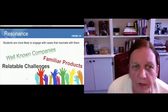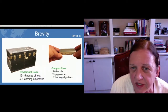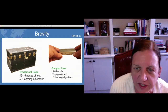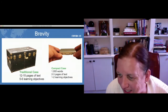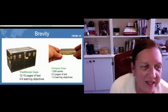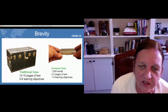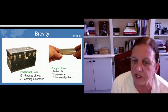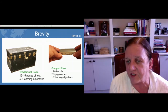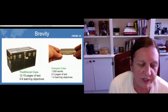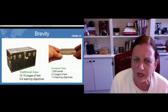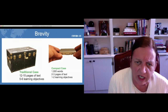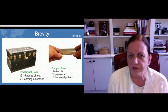The other thing that makes a big difference in online cases is the brevity of the case itself. Traditional cases — the old beat-up trunk — are about 12 to 15 pages of text and have five to six learning objectives. You've probably encountered a student who says, why would I read 15 pages on an industry I don't even care about? And they don't bother to read the case, which makes it hard for any learning to occur.